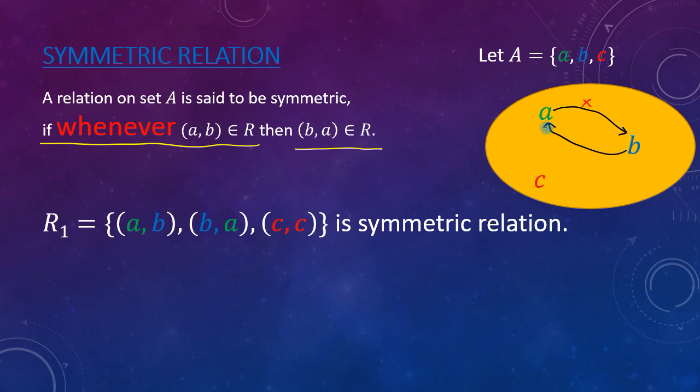For example, a relation R1 is given here. Okay, let us examine it whether it is symmetric or not. So ordered pair (a, b) is here, that means a is related to b.